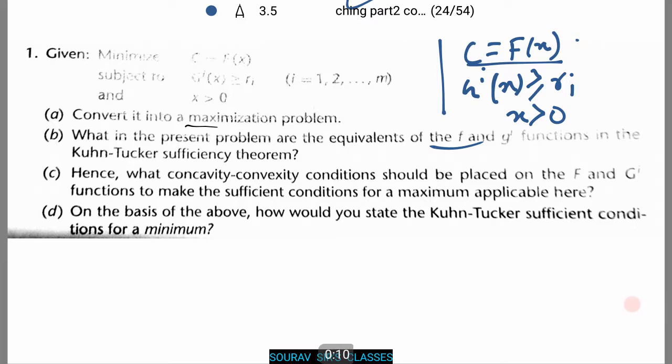Over here we are given a question. Since it was un-visible, I have written it on the side. We are given with a question: minimize c equals fx, and the constraints are g to power ix greater than or equal to ri, and x is greater than 0.